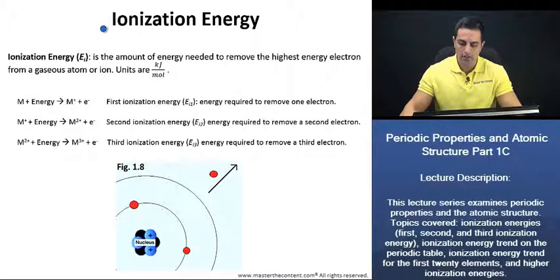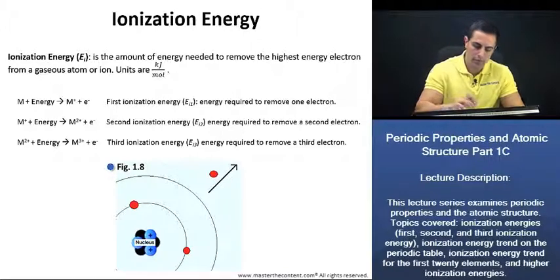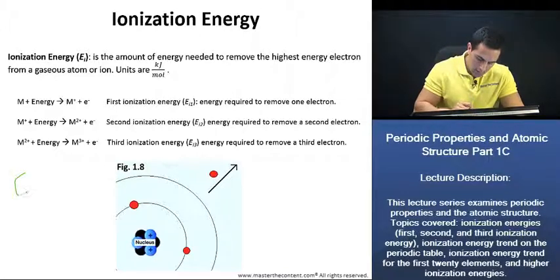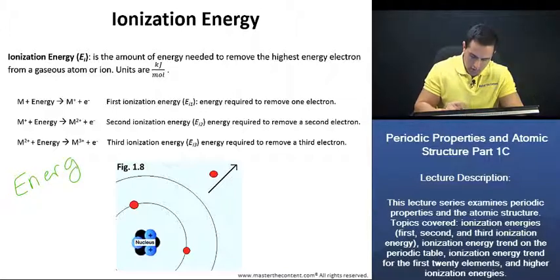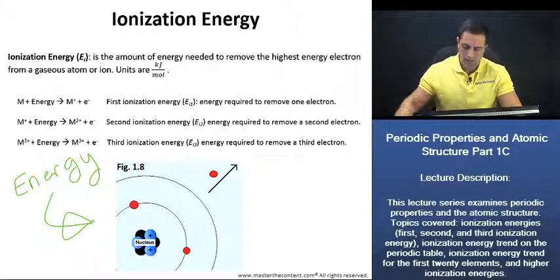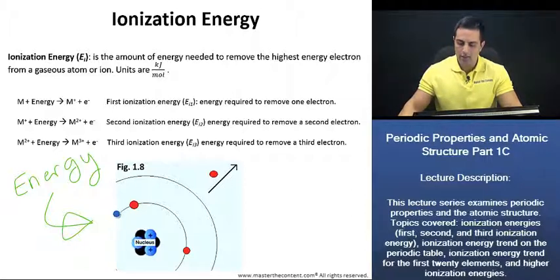Ionization energy. Let's begin by taking a look at figure 1.8. If we add energy to an atom, as you see here, then we can make an electron jump to a higher energy level.